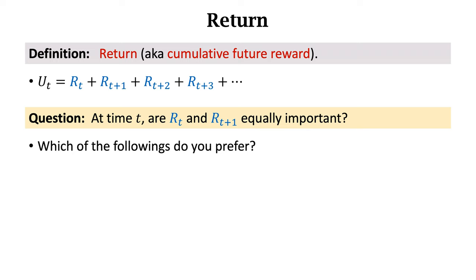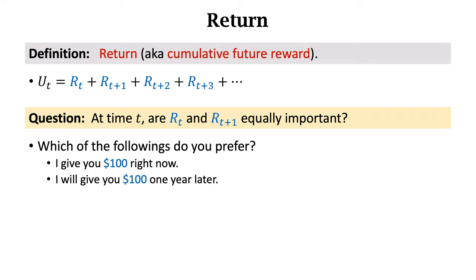Assume you have two choices. First, I give you $100 right away. Second, I give you $100 one year later. Which do you prefer? All rational people will choose to receive the money right away, because the future is full of uncertainty—you may not be able to find me one year later. Obviously, $100 today is better than $100 one year later.